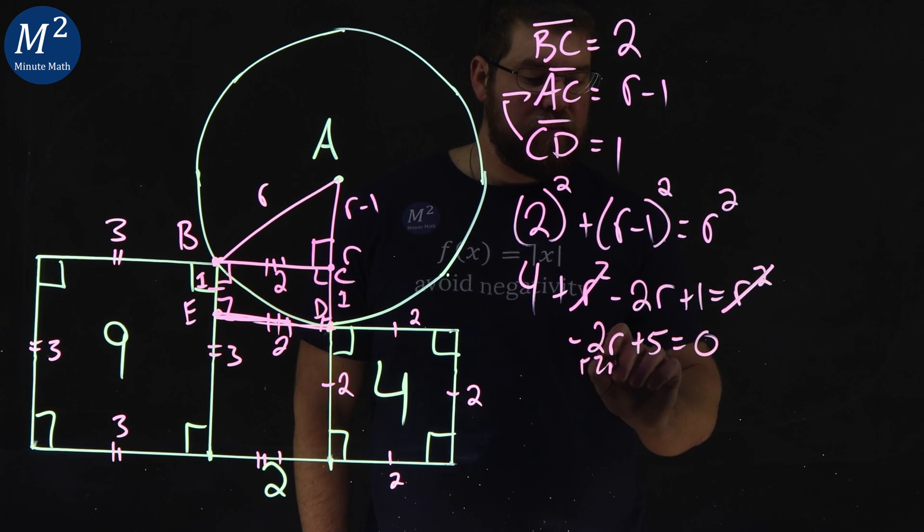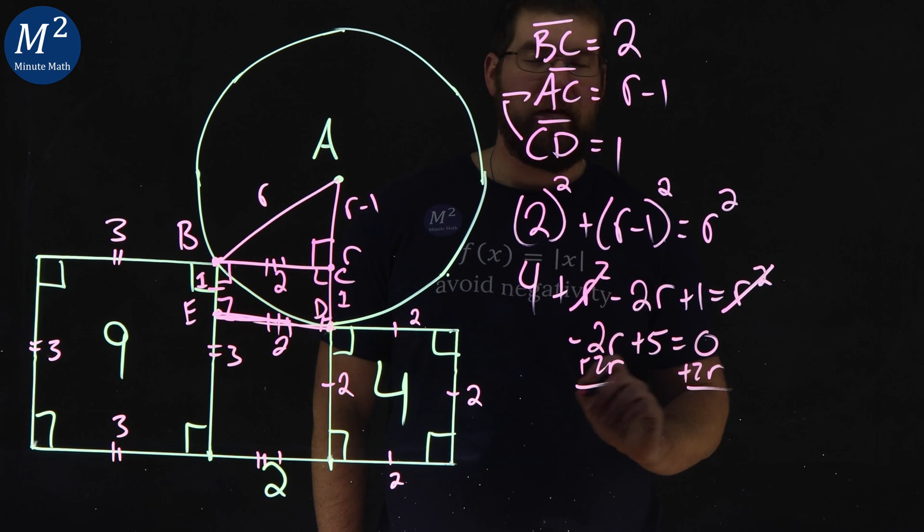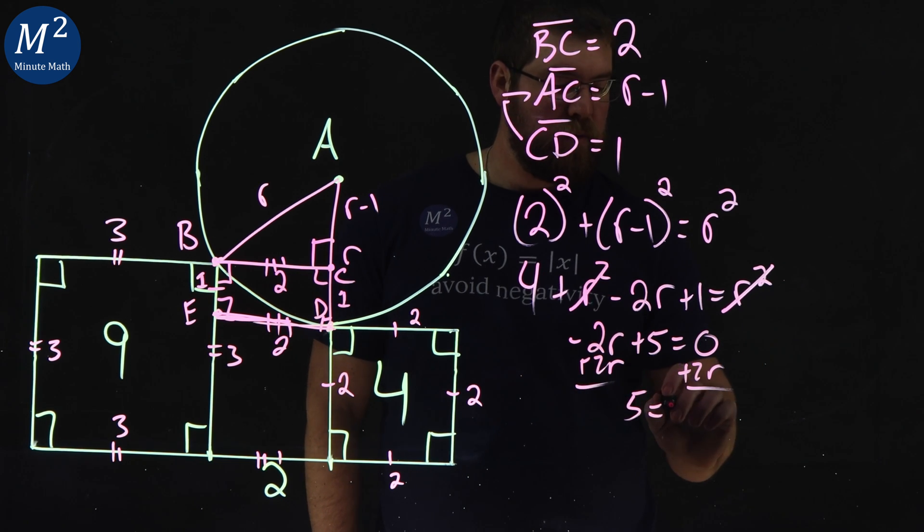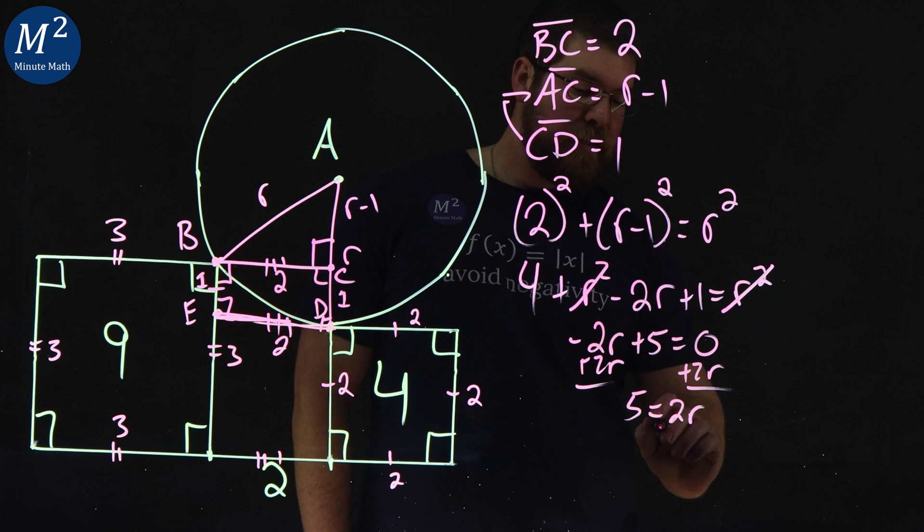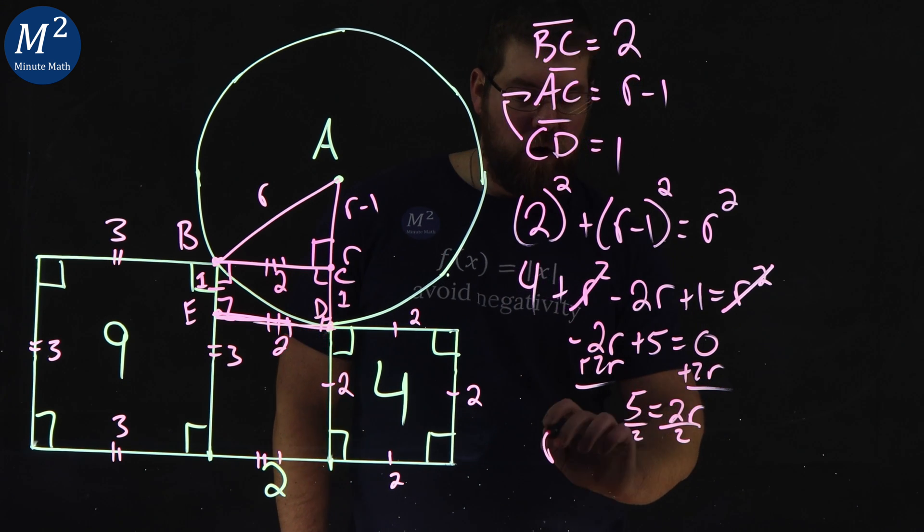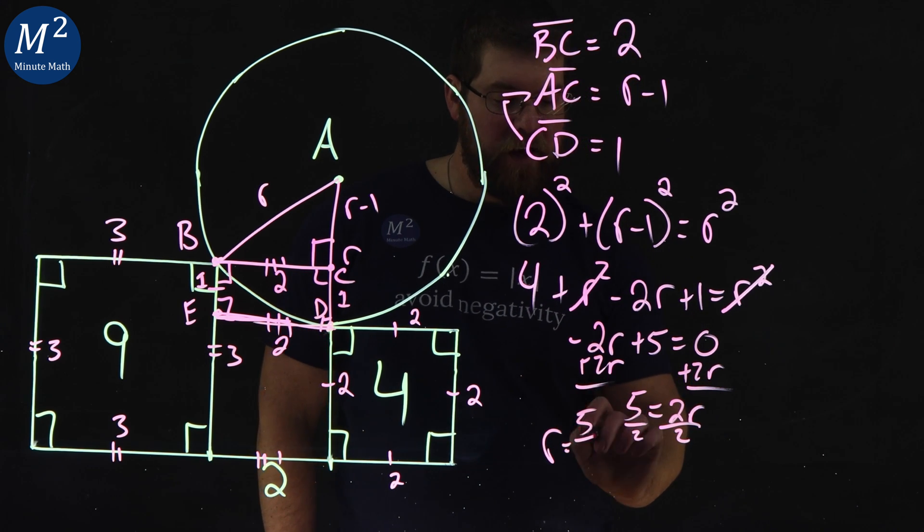Add 2R to both sides. You know the algebra. And five equals 2R. R by itself divided by two, and R being our radius is five halves.